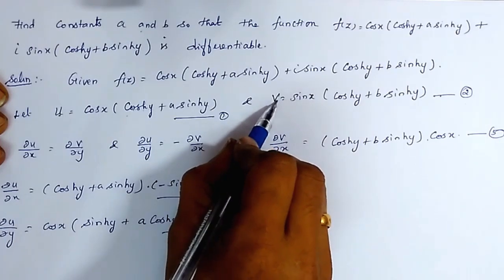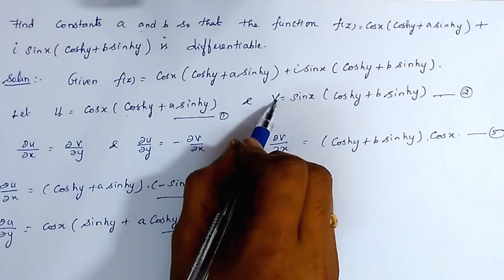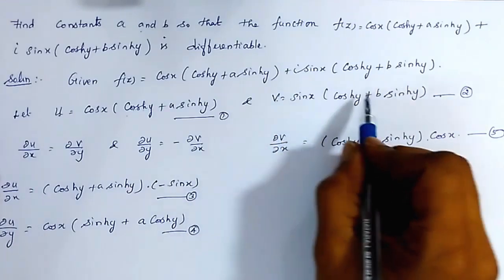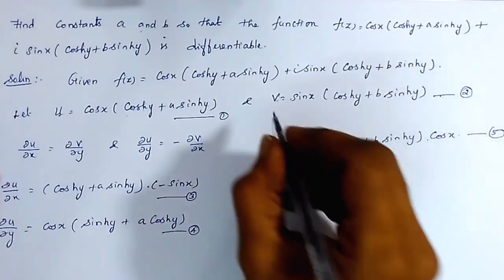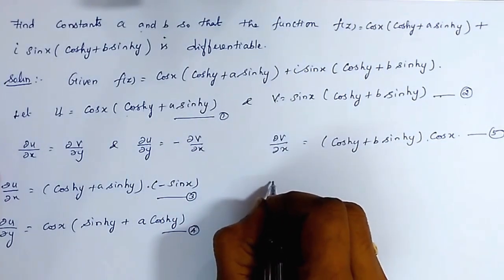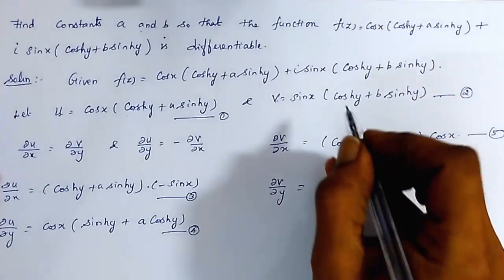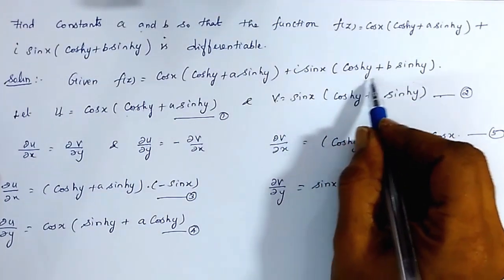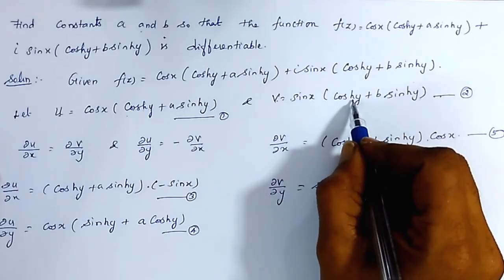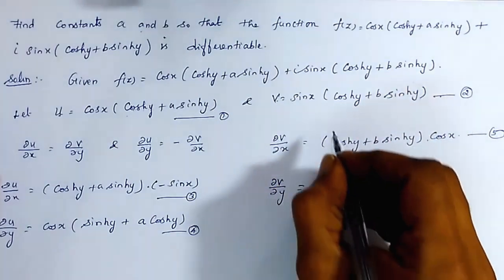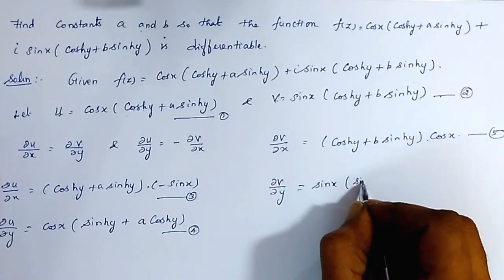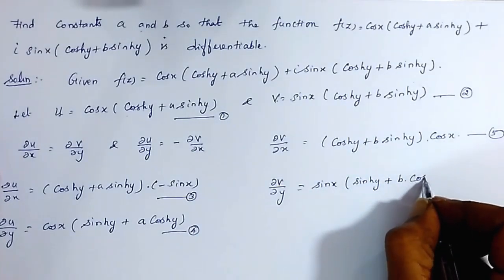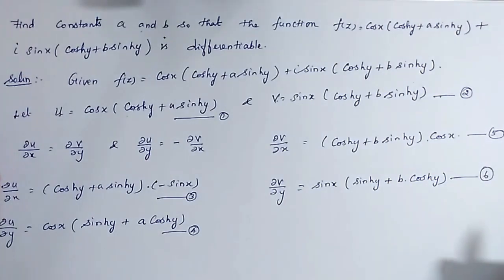Now differentiating equation 2 partially with respect to y, keeping x as constant: sin(x) is constant and the variable part is (cosh(y) + b·sinh(y)). So ∂v/∂y = sin(x)·(sinh(y) + b·cosh(y)), since the derivative of cosh(y) is sinh(y) and the derivative of sinh(y) is cosh(y). Let us assume this is equation number 6.